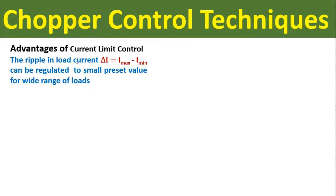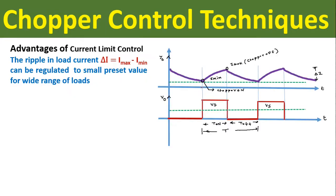Advantages of current limit control: In current limit control, the ripple in load current ΔI0, equal to I0_max minus I0_min, can be regulated to a small preset value for a wide range of loads. This diagram shows the current limit control scheme, where the load current is varying between maximum and minimum values. When the load current is increasing from minimum to maximum, the chopper switch is in the on condition, and Ton plus Toff equals the total time period T.